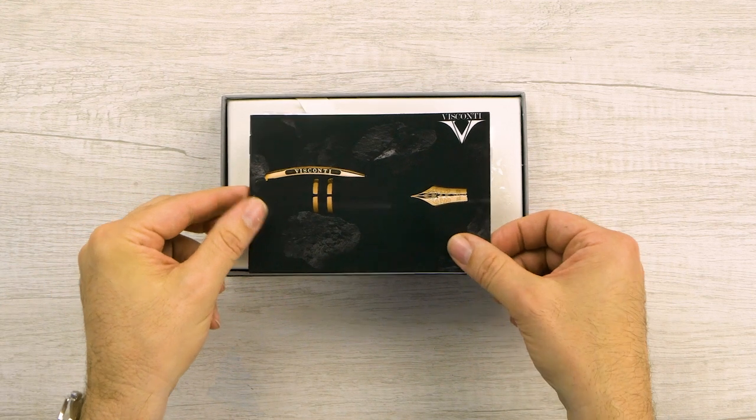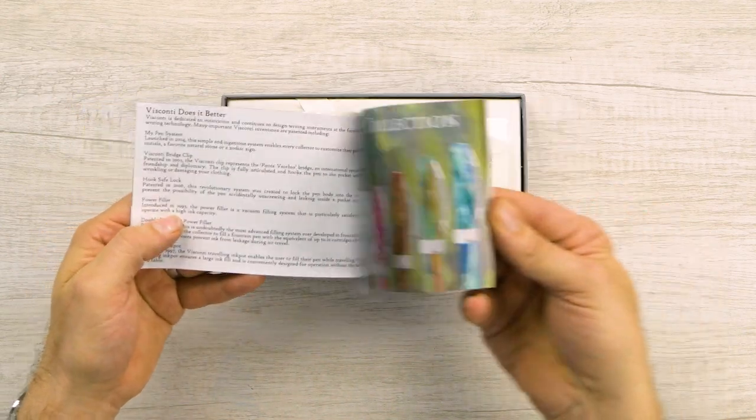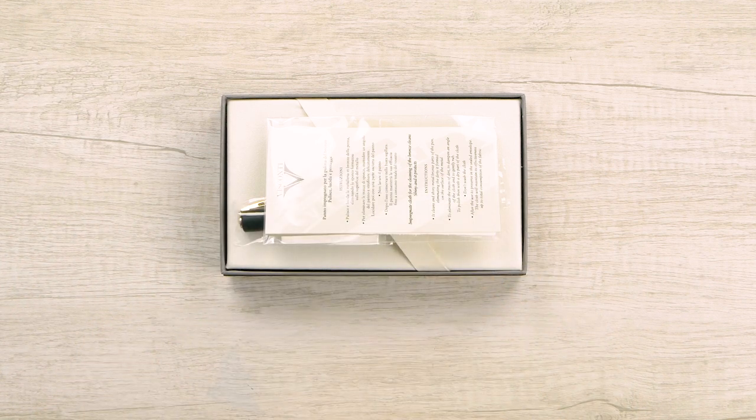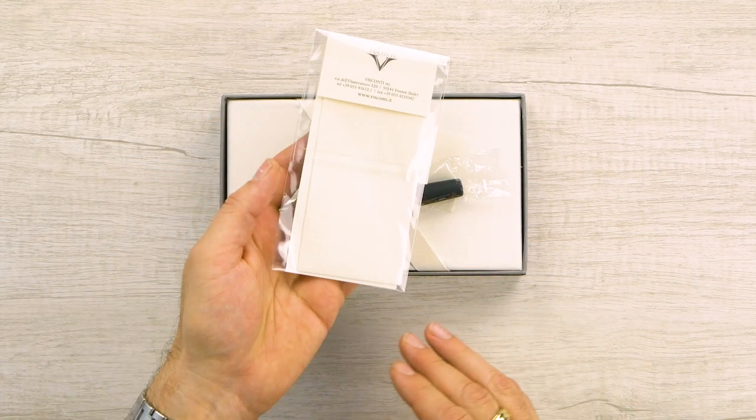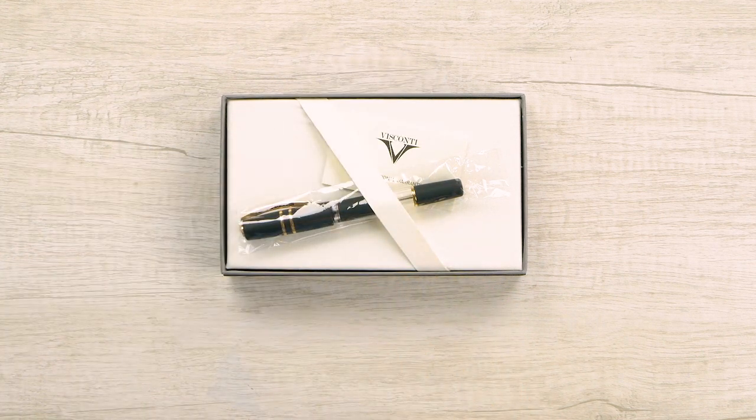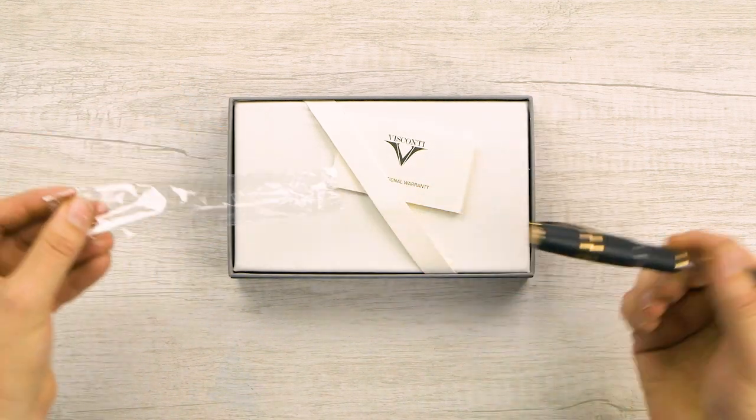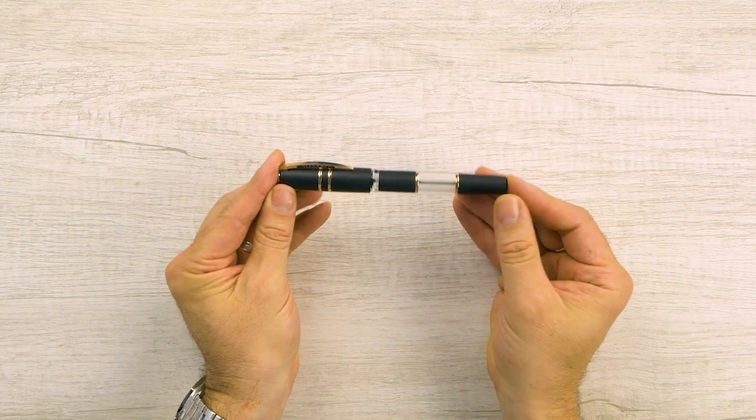Let's open it up. We're not here for the box. We've got a little bit of Visconti history, a couple of the different pens in here, throw that to the side. We've got a Visconti polishing cloth. And here it is in all its glory. Let's put that aside and let's take a look at this.